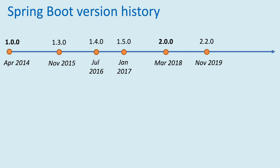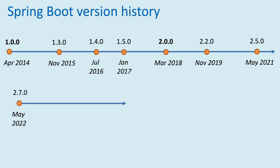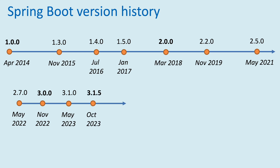Spring Boot 2.2.0 came in November 2019, and in May 2021 the next version was Spring Boot 2.5.0. Spring Boot 2.7.0 was released in May 2022. The next major version is Spring Boot 3.0.0, released in November 2022.